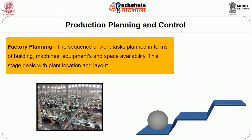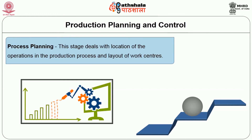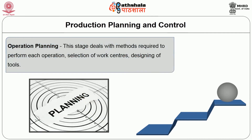There are three levels of production planning. Factory planning: the sequence of work tasks planned in terms of building, machines, equipment, and space availability — this stage deals with plant location and layout. Process planning: this stage deals with the location of the operation in the production process and layout of work centers. Operational planning: this stage deals with methods required to perform each operation, selection of work centers, and designing of tools.